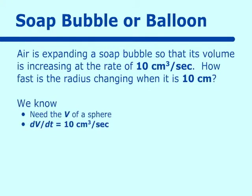We know that we need the volume of a sphere, and we will get that formula in a minute. We know the change in volume, which we write as dV/dt, and that is equal to 10 centimeters cubed per second. The volume of the sphere is V = 4/3 π r³.